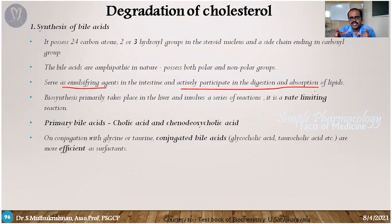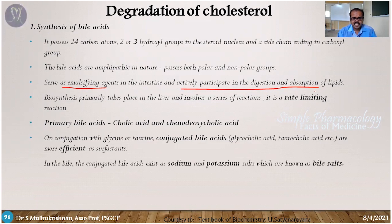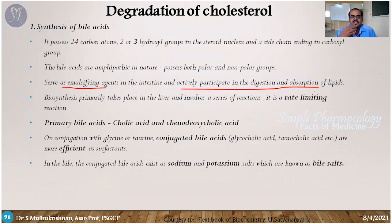Primary bile acids conjugate with amino acids to form glycocholic acid and taurocholic acid, which serve as more efficient surfactants compared to their parent compounds. These then combine with sodium or potassium to form salts, which is why they are called bile salts — they are the sodium or potassium salt forms of glycocholic acid or chenodeoxycholic acid.